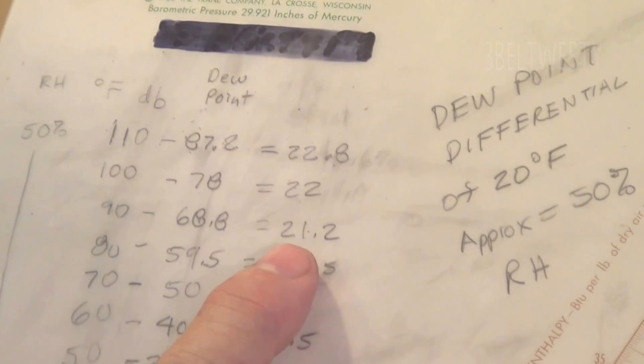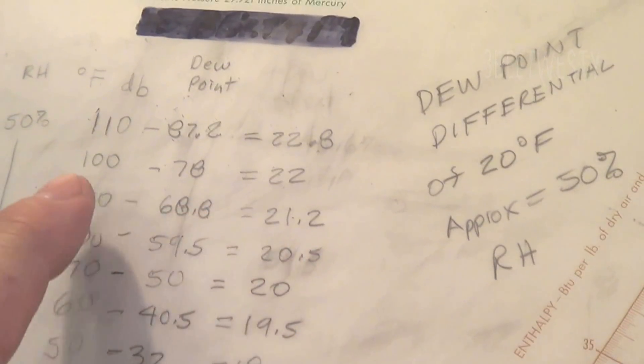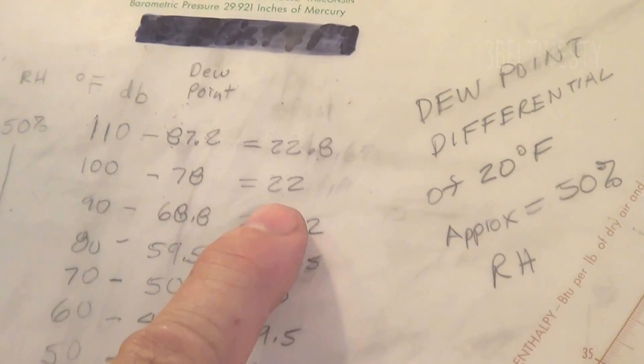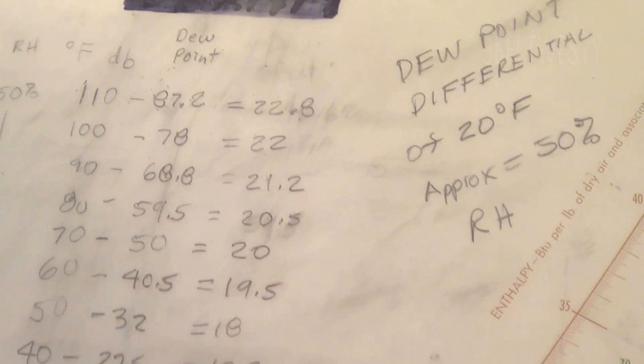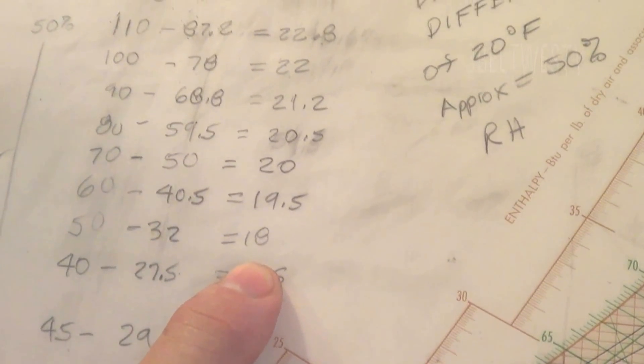90 instead of being 20 degrees is 21 and a half. 100 degrees, it's 22 degrees F. Down here at 50, it's 18 degrees F.